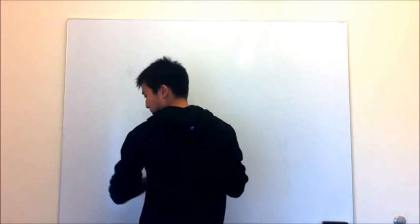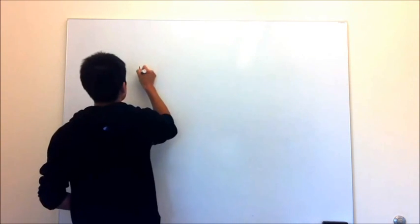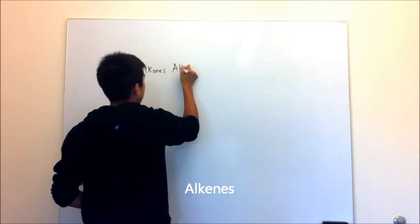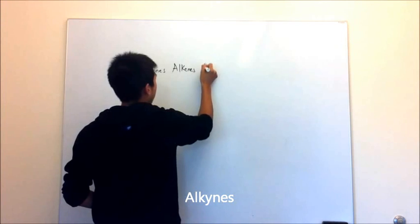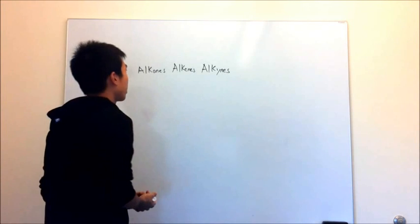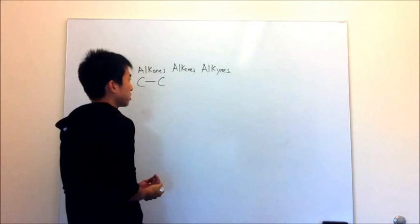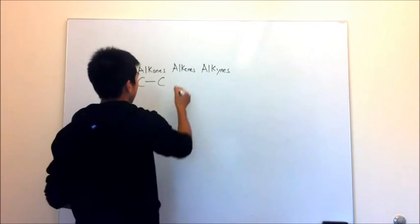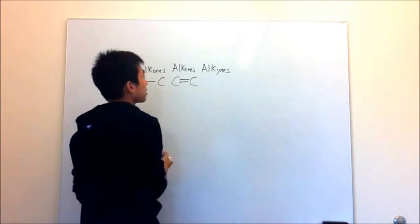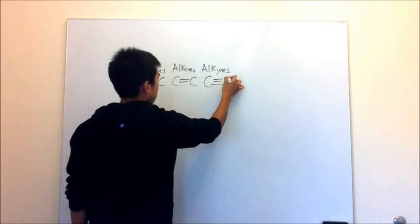Let's talk about alkanes, alkenes, and alkynes. Alkanes are just carbons bonded to carbons with just a single bond. Alkenes are one step more complicated — they're still carbons bonded to carbons, but now they have a double bond. And then alkynes are just the next step more complicated: they're carbons triple bonded to each other.